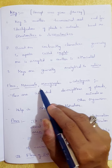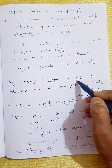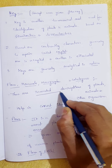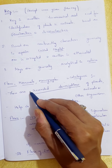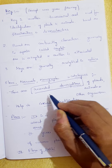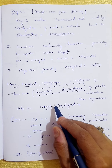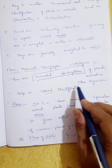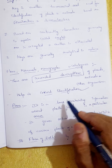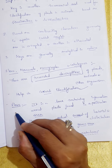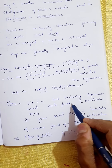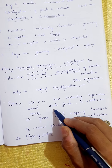Flora, manuals, monographs, and catalogs are other types of taxonomical aids that provide recorded descriptions of plants and animals. They help in the correct identification of organisms. Flora refers especially to plants — it is a book containing information about the plants found in a particular area.